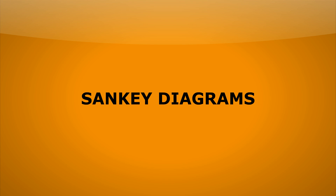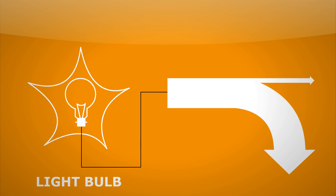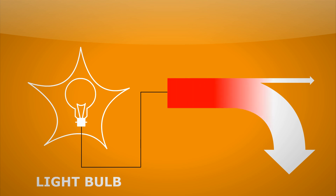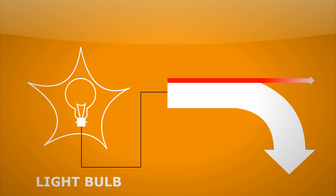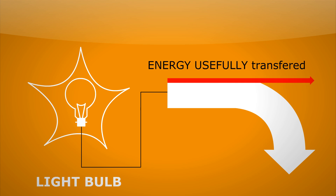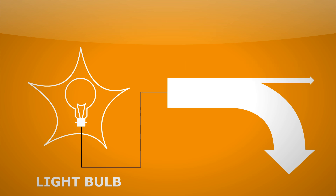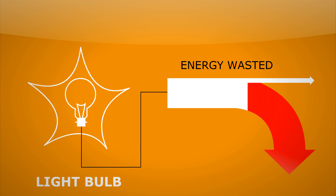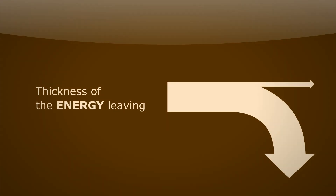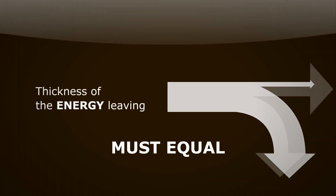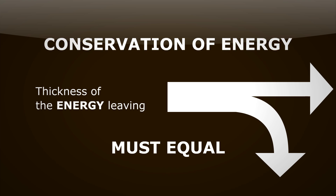Let's look at a really simple one for a light bulb. What are the key features? Well, the thickness of the arrow going in at the start shows how much energy goes into the device — in this case, it's electrical energy. The thickness of the arrow going straight on shows how much energy is usefully transferred, in this case as light. And the thickness of the arrow going down is how much energy is wasted, in this case heat. The thickness of the two arrows leaving must equal the thickness of the arrow going in, so we can see conservation of energy there.